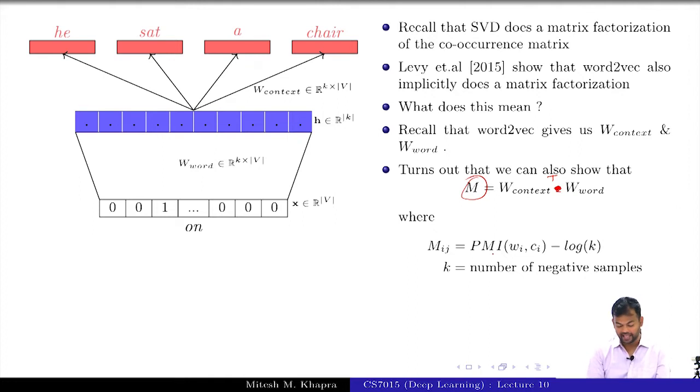And what is M? M is actually nothing but the PMI matrix minus this log K. Where does the K come from? What was K? The negative samples that you are taking.